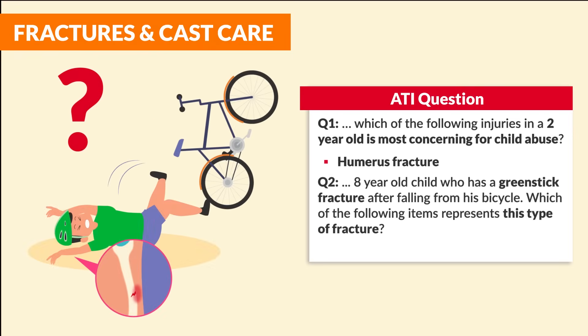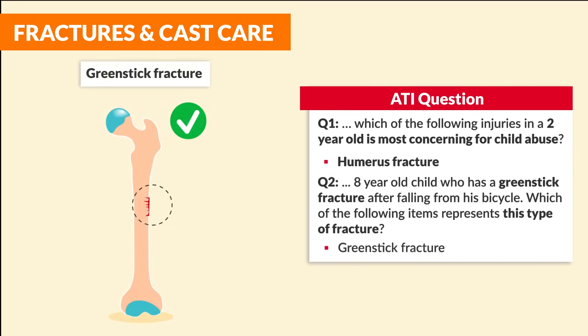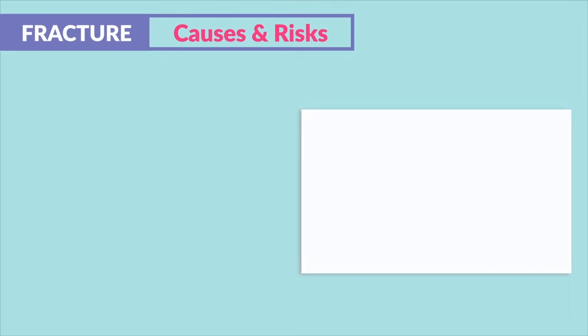Question two: an eight-year-old child has a greenstick fracture after falling from his bicycle — which of the following items represents this type of fracture? The greenstick fracture, also called an incomplete fracture, only goes partially through the bone.